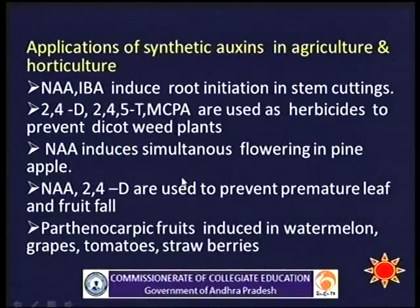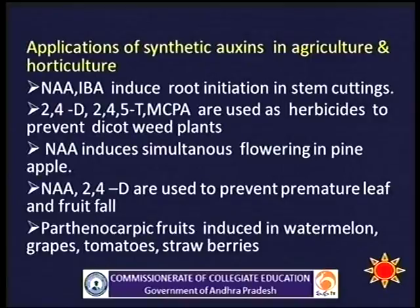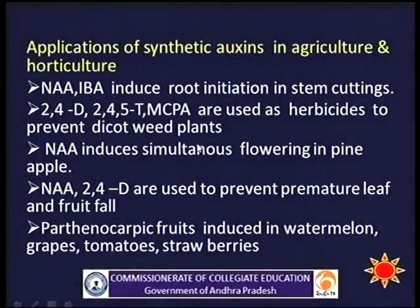Applications of synthetic auxins in agriculture and horticulture: Various synthetic auxins are used to achieve different effects in agriculture and horticulture. NAA and IBA are used to promote root formation from stem cuttings. 2,4-D and 2,4,5-T are used as herbicides — they selectively kill dicotyledonous weeds in crops.